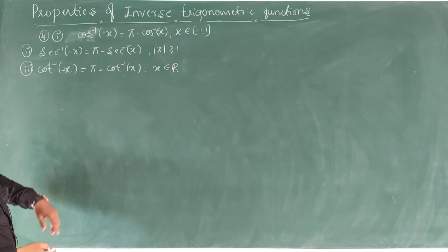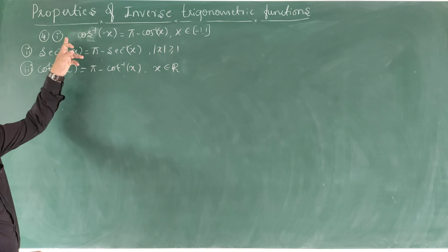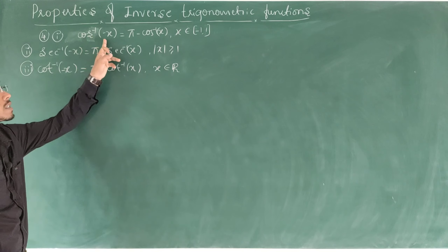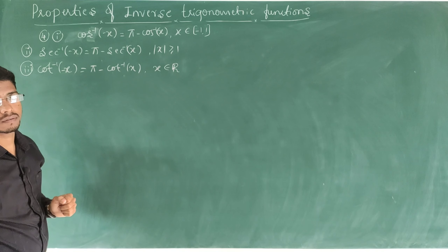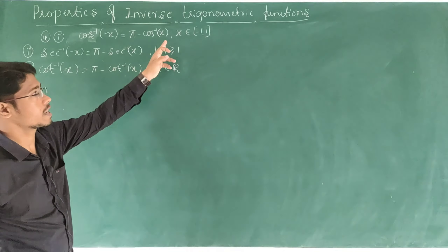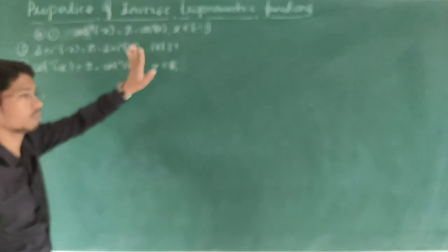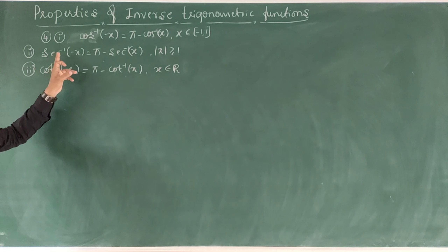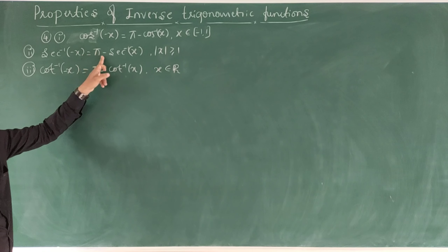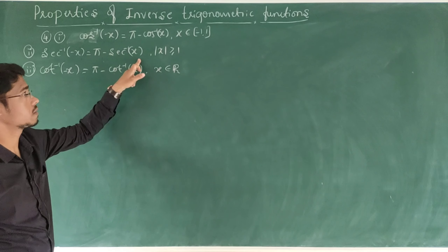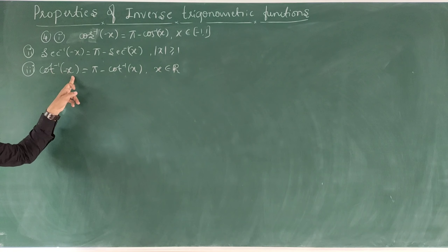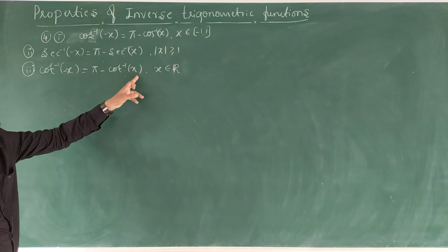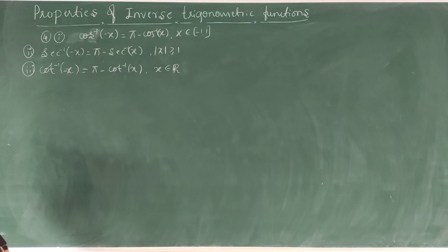See the next property — fourth set. Cos inverse of minus x equals pi minus cos inverse of x, when x belongs to [-1, 1]. Sec inverse of minus x equals pi minus sec inverse of x, when mod x ≥ 1. Cot inverse of minus x equals pi minus cot inverse of x, for x belonging to R.